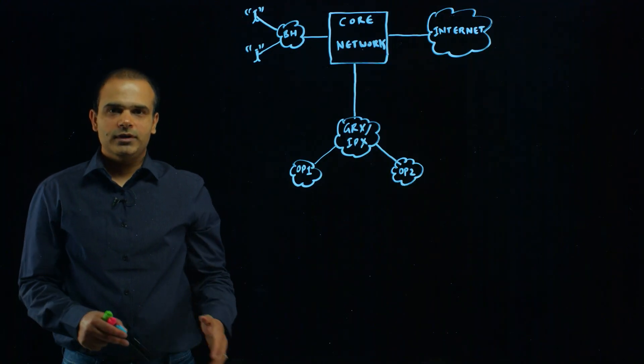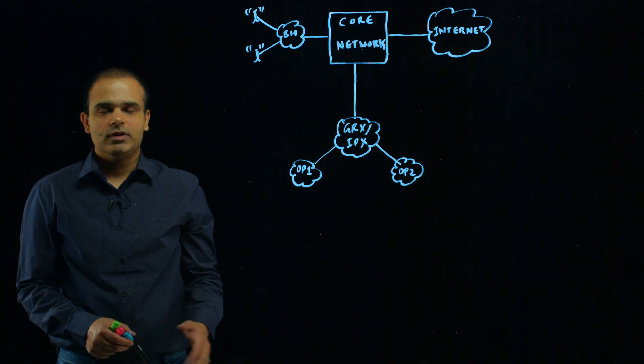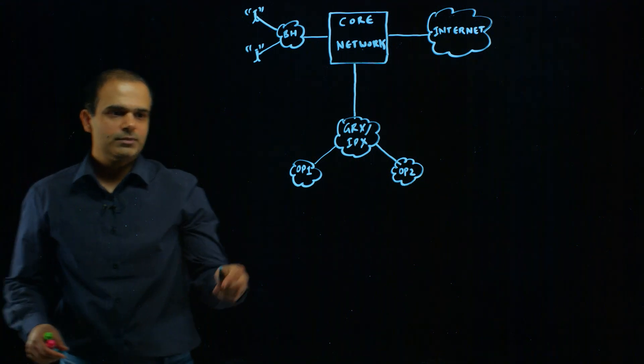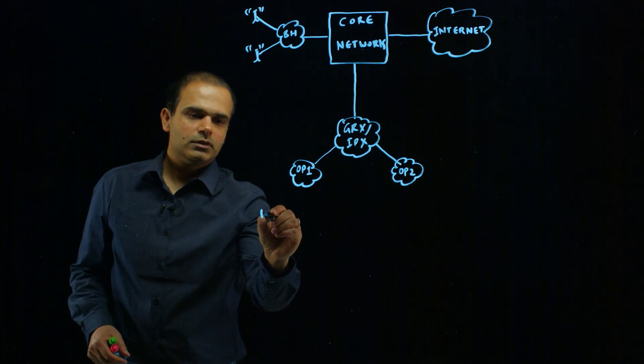Let's take a look at the various types of attacks and threats over the roaming network. The first type of attack is the signaling storm.